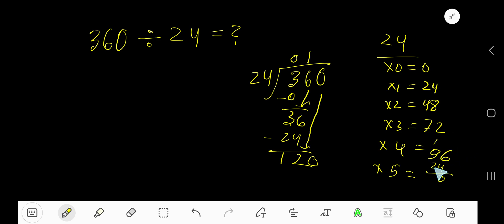That's 120. 24 times 5 equals 120, so 24 goes into 120 exactly 5 times. 5 times 24 is 120. Subtract and we're getting 0.